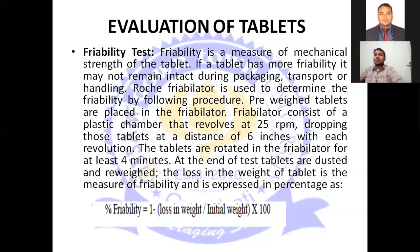Next is the friability test. For the friability test, we use a rotary friabiliter. We take 10 tablets, first weigh all the tablets and note the weight. After that, we put the tablets in the rotary friabiliter at 25 rpm for five minutes. After five minutes, we take the tablets out and again weigh them, noting the final weight.